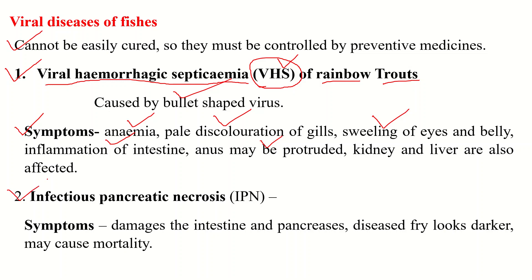The second viral disease is Infectious Pancreatic Necrosis, or IPN. This virus damages the intestine and pancreas. The virus is about 70 nm in diameter and contains an RNA genome. Young fishes are easily affected by this virus.